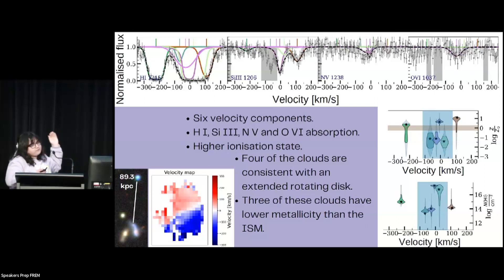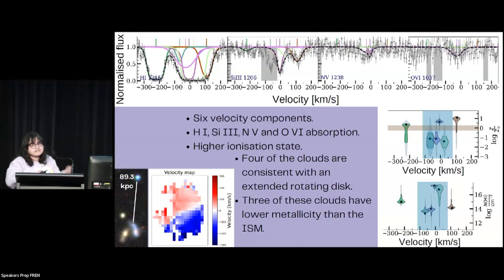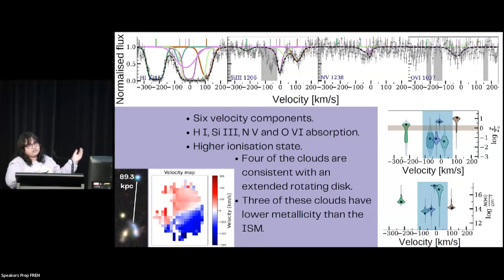We find that four of the clouds are consistent with an extended rotating disk in this case. Also, three of these clouds have a lower metallicity than the ISM of these galaxies, which is something we would expect because the farther away we go from the center of a galaxy, the lower the metallicity.